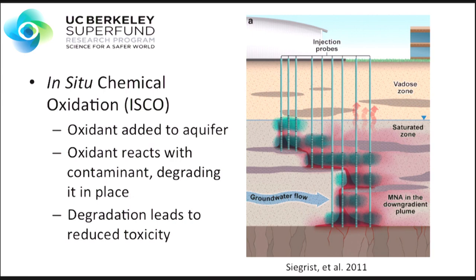This figure on the right should help you understand a little bit better what I'm talking about. It's a picture of the subsurface and the pink and red areas have been affected by a pollutant spill — this could be a chlorinated solvent, for example, that's leaked from a tank. In ISCO, a series of injection wells are drilled, represented by the green lines. They're drilled down into the aquifer and oxidant solution is added to them so that it can mix with the contaminants and react with them and degrade them in place.